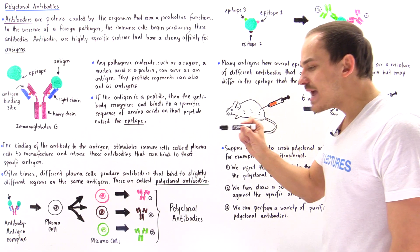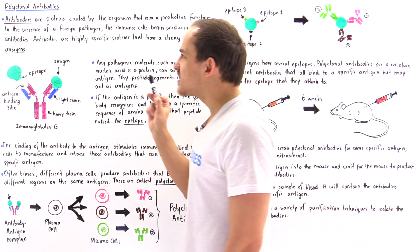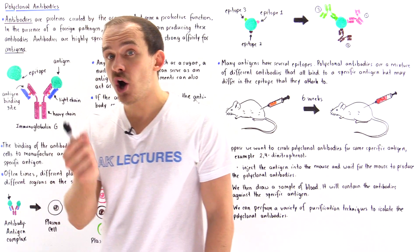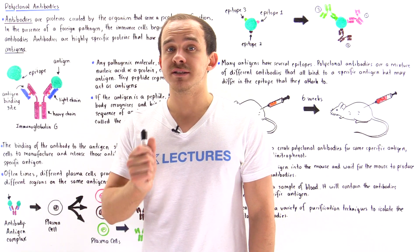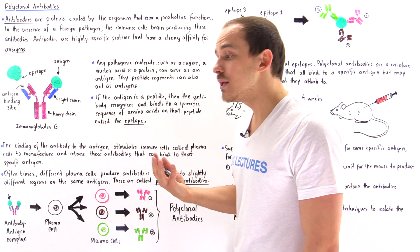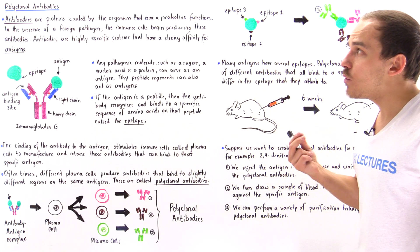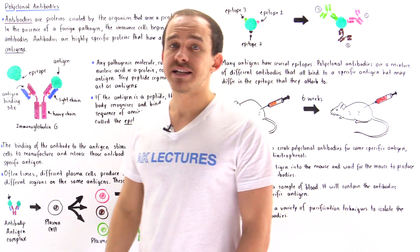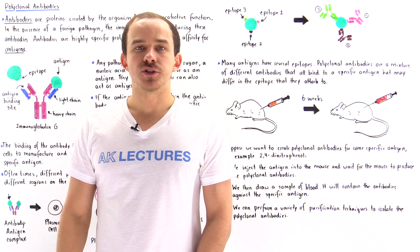In the next lecture, we're going to discuss something called monoclonal antibodies, and those are actually difficult to synthesize. It took a while to basically realize how we can synthesize monoclonal antibodies, as we'll see in the next lecture.